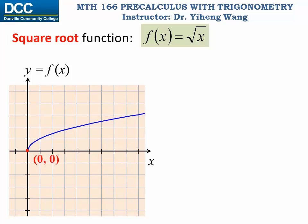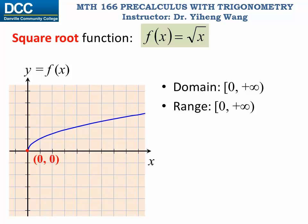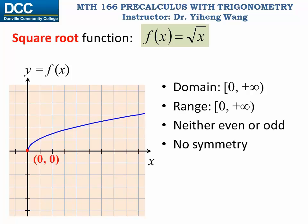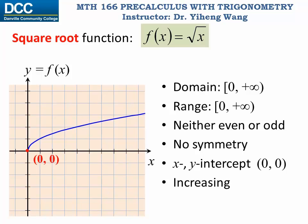Here is the square root function f(x) equals the square root of x. The function is undefined if x is negative, so the domain is from 0 to positive infinity, for any real number greater than or equal to 0. The range is the same, from 0 to positive infinity. The function has no symmetry, so it is neither even nor odd. It has the same x and y-intercept, (0, 0), the origin. And the function is always increasing.